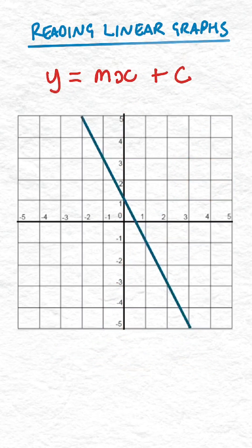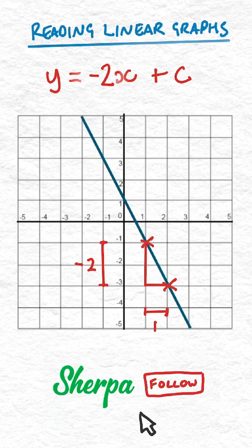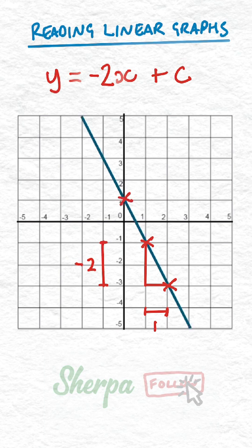In this next example, pick two points, draw the triangle and see that it's moving down 2 and right 1, so the gradient would be negative 2. The y-axis intercept would be 1, so the equation is y = -2x + 1.